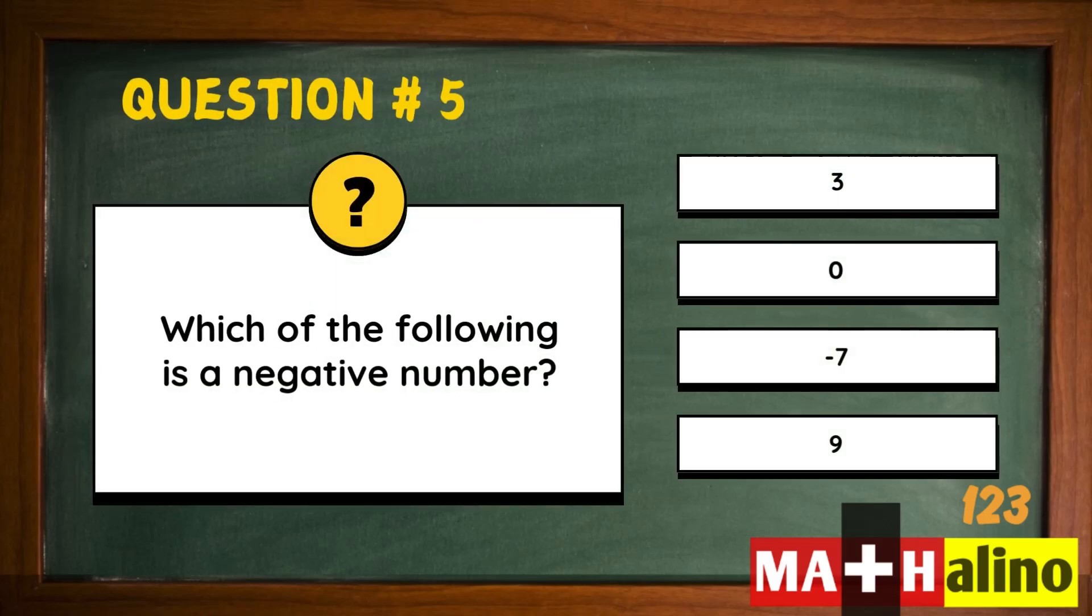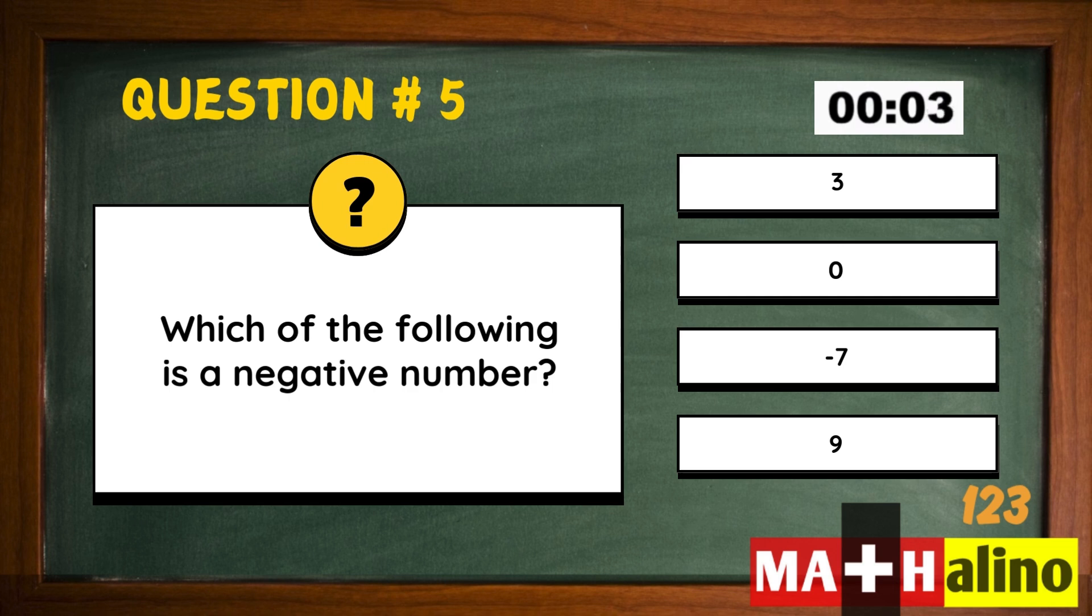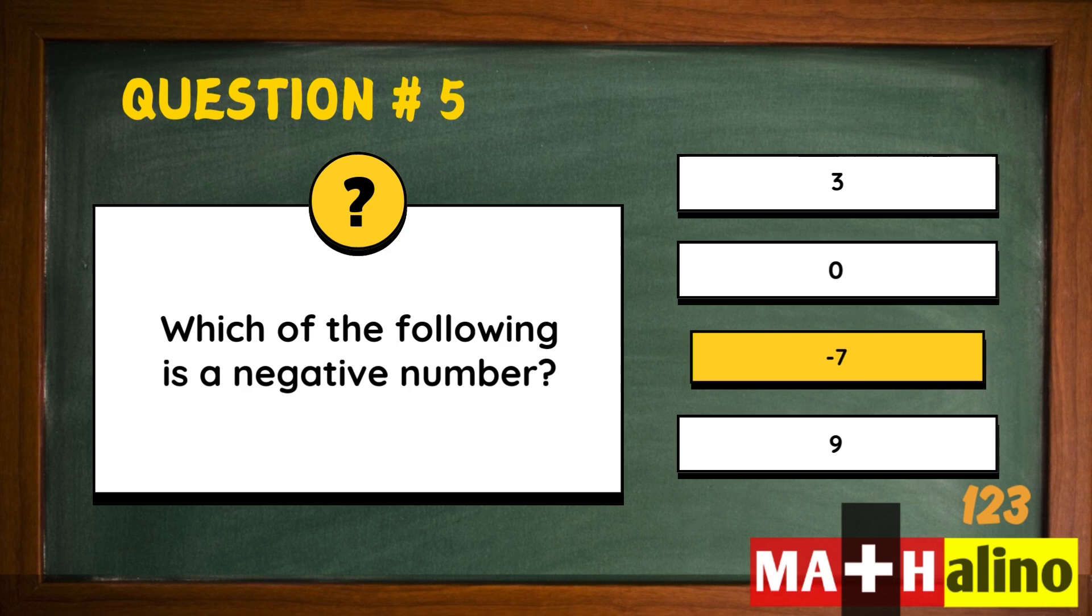Which of the following is a negative number? Negative seven.